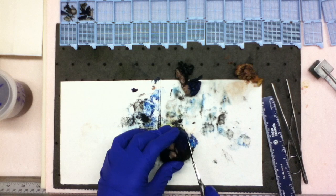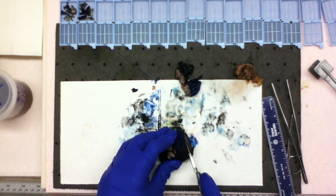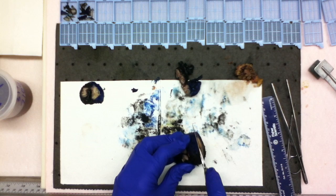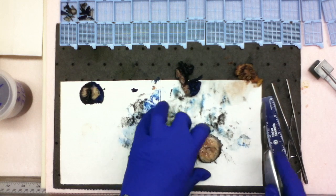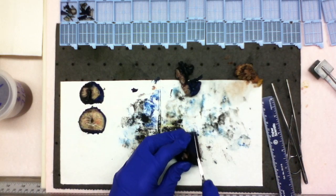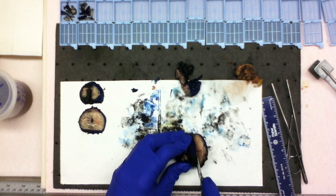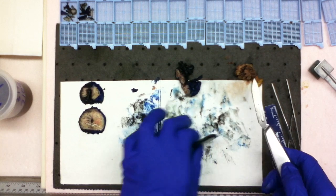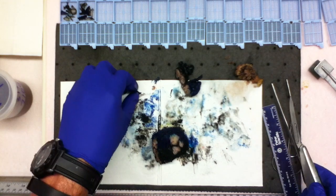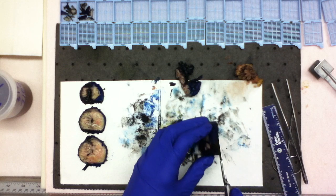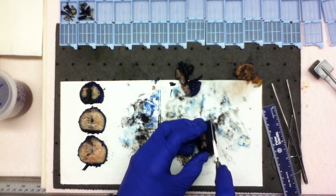And now we'll just section the prostate from apex to base. Try and keep it consistent thickness. This prostate came in later last night and it didn't have adequate fixation on it, so it's a little bit fleshy. It's not as well fixed as what we would usually like. We let our prostates fix overnight regardless of what time they come in to help make them a firm, easy dissection specimen.